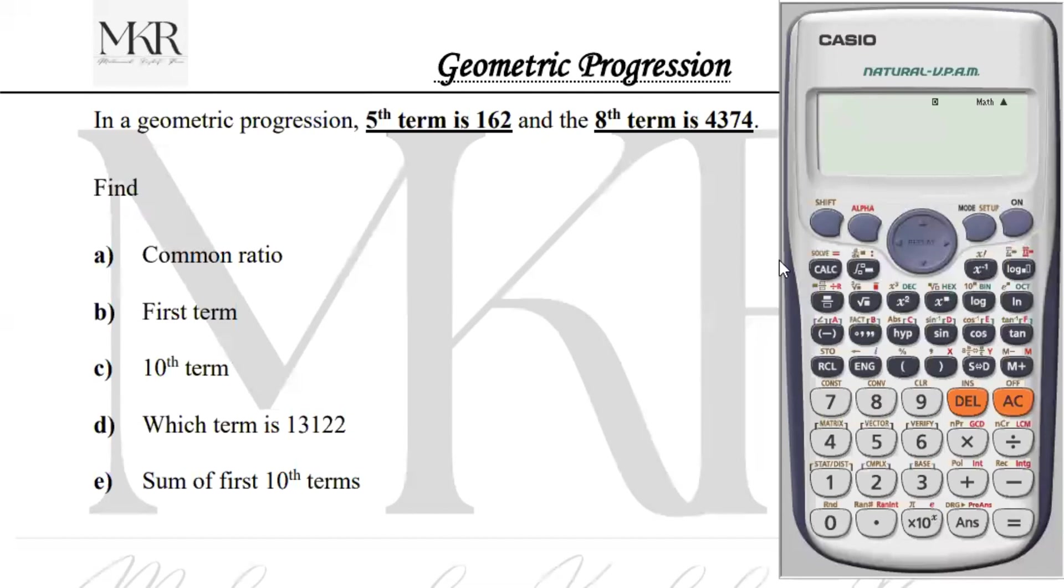First, turn on the calculator in mode. We have three options: statistics and geometric progression. To solve for geometric progression, press 6 key. For arithmetic progression, press 2 key. For geometric progression, press 6 key.